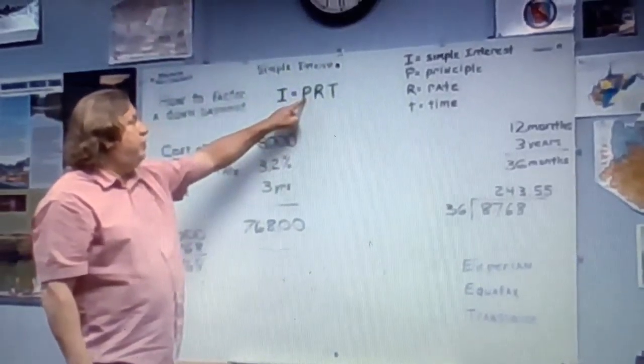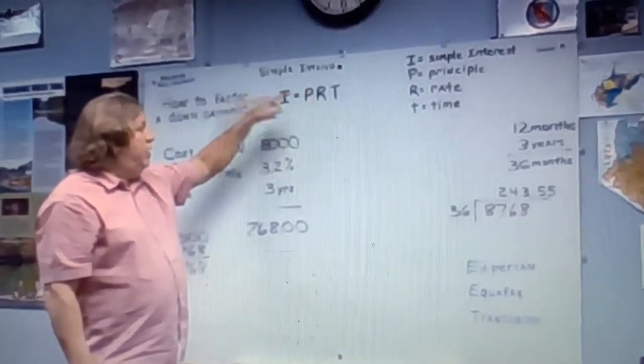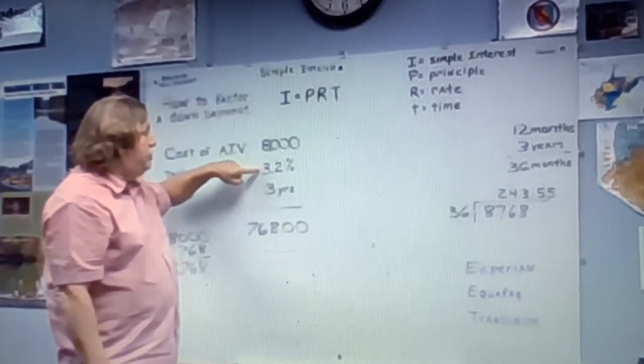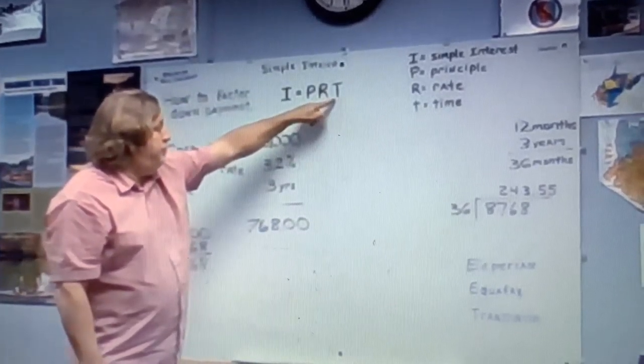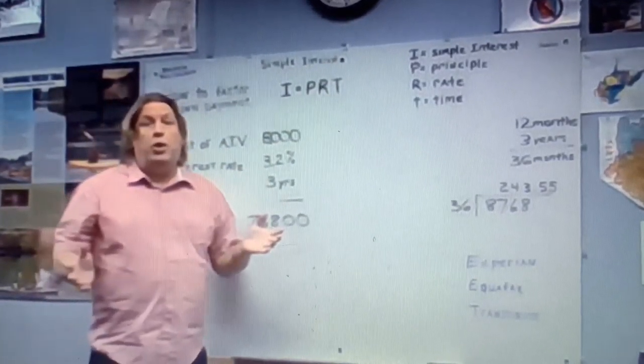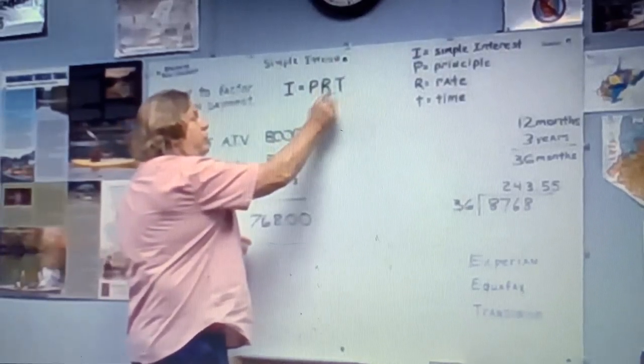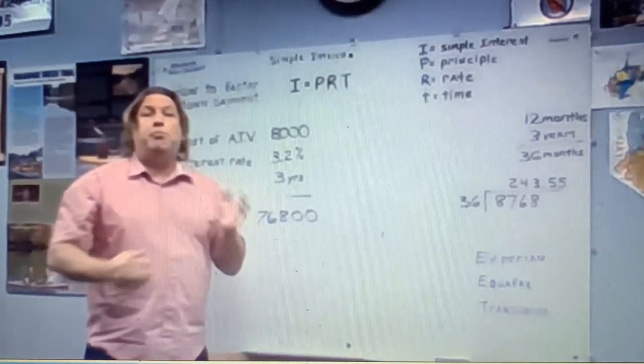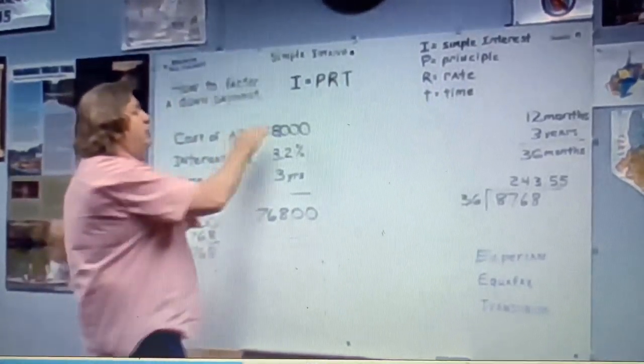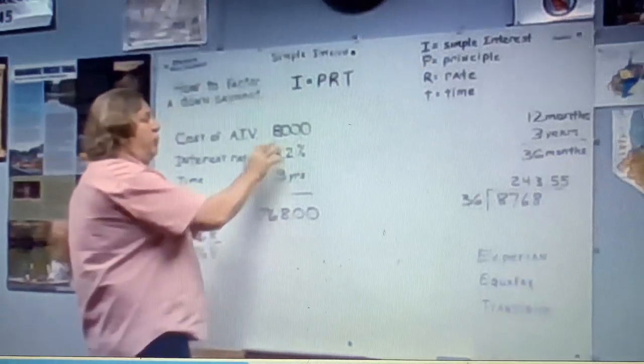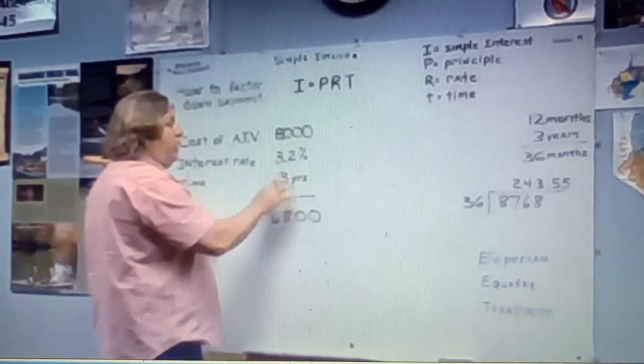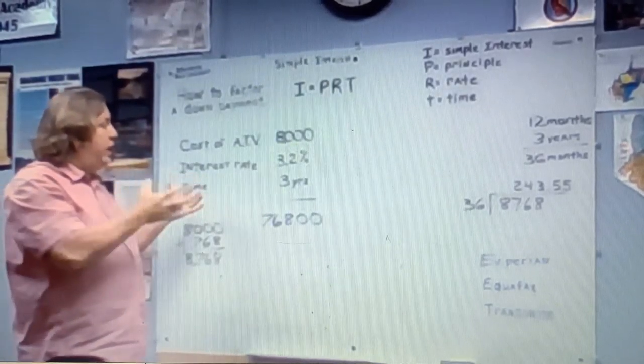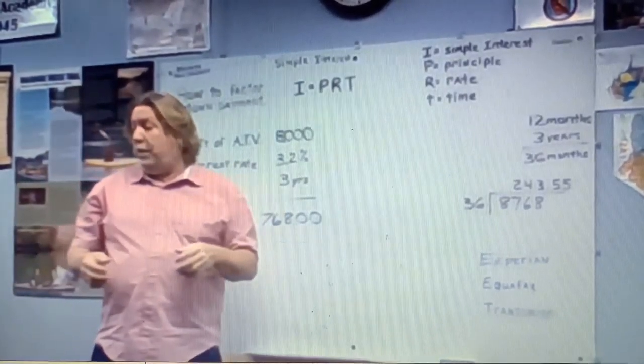So what is the principal? $8,000. What is the rate? 3.2%. What is the time? Three years. So in algebra, when you have different variables, and they're all next to each other, letters next to each other, that means they're multiplying. So we're going to plug these numbers in here. $8,000 is the principal. 3.2% is the rate. Three years is the time. Times those three things together, and you will get the simple interest. Could you all do that for me, please?